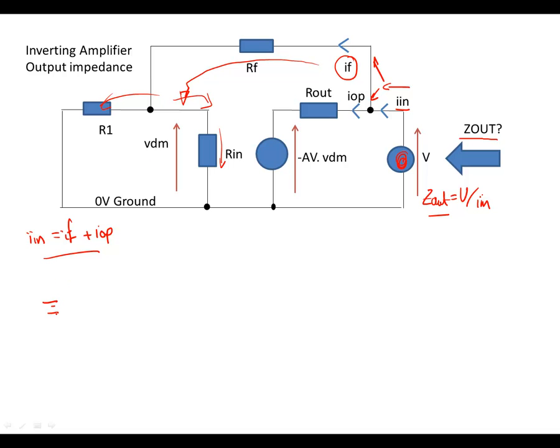Effectively, we've got our voltage source V, driving into RF. And then we have Rin, and we have, this is Rin, the op-amp resistance, and this is R1, this is RF. And here is my source V. So this is the current IF, the feedback current.